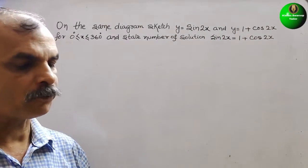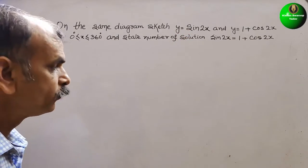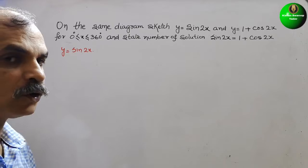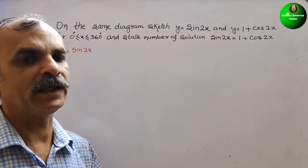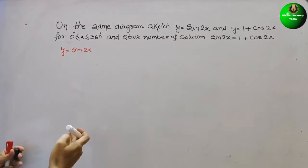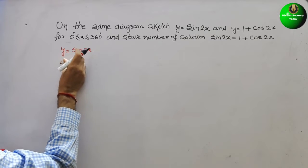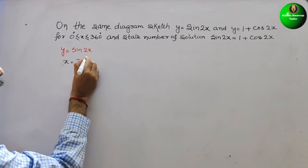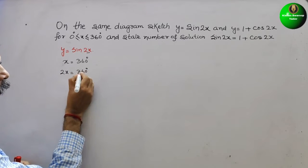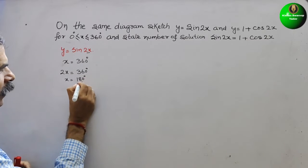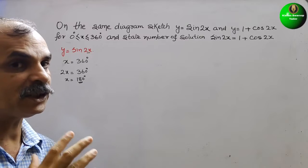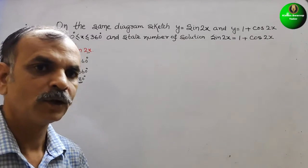First we take y = sin2x. We know that the sine curve completes one complete cycle in 360°. But here they have given 2x, so 2x = 360°, which gives x = 180°. That means we have to complete one cycle in 180°, so in 360° we will get 2 complete cycles.